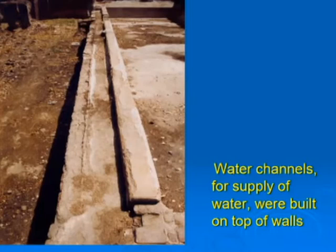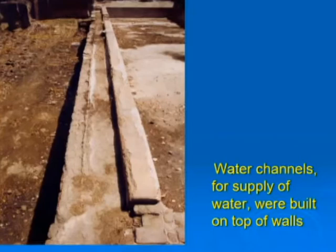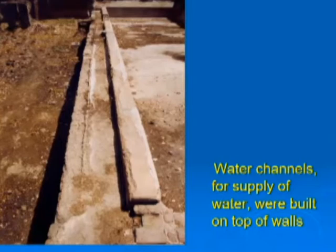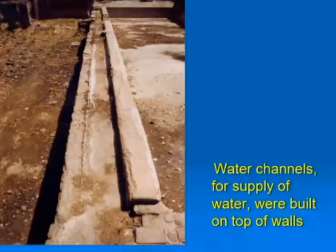Why was the canal at a higher level? Because due to the flow of water from a higher level, the fountains could run properly. When I say the fountains could run properly, the Mughal fountains never ran as they run today — rising to heights of 10, 15, 20, 30, even 40 feet. The Mughal fountains just came out of the nozzle and rose to a level of one or two feet maximum.